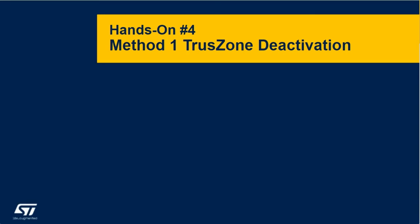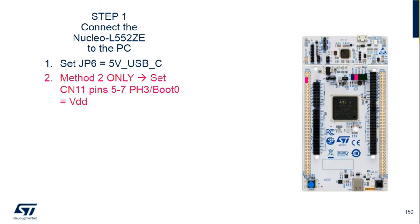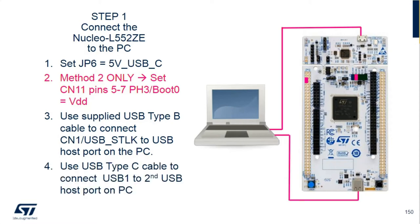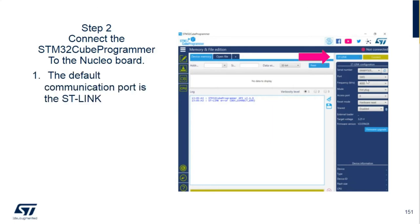The final hands-on of the nine-part video series — we're going to use method one to deactivate the TrustZone. The first thing we need to do is change the power source. We're going to move the jumper on JP6 from the ST-Link side to the five-volt USB-C cable. We're going to use the Type-B cable to connect the ST-Link as we've always had, and now add the Type-C cable from the USB port at the bottom of the Nucleo board to the PC. So we have the ST-Link connected, power through USB Type-C, and we'll go ahead and connect to the Cube Programmer, select ST-Link as default, hit connect, and confirm the board is connected.